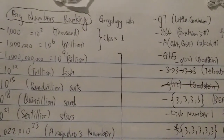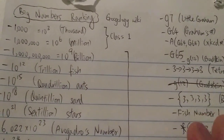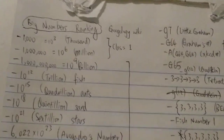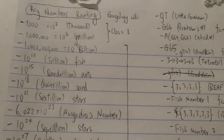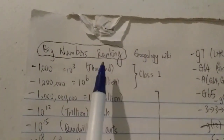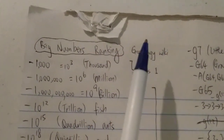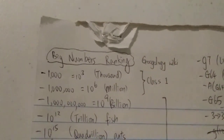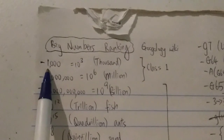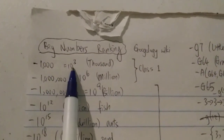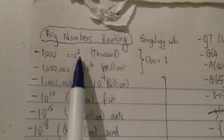The Googology wiki defines numbers into 20 different classes, from class 0 all the way to class 20. This list will include most of the classes. They have a class 0 which goes from number 0 to 6, but I'm going to skip that. So class 1: the first number is a thousand, which is 10 to the 3, so 1 followed by 3 zeros.